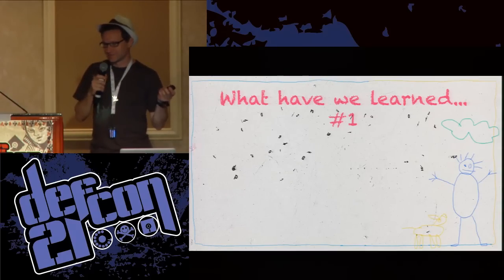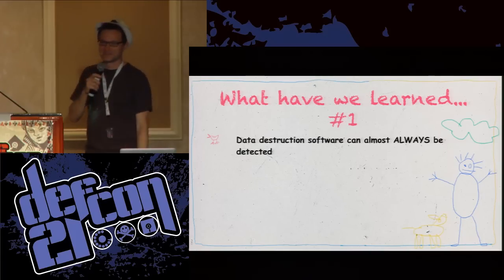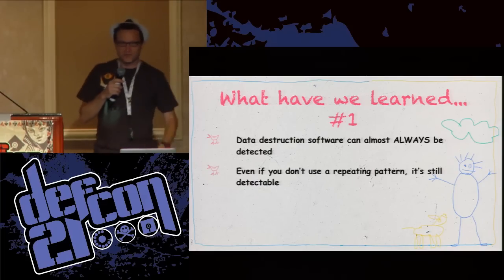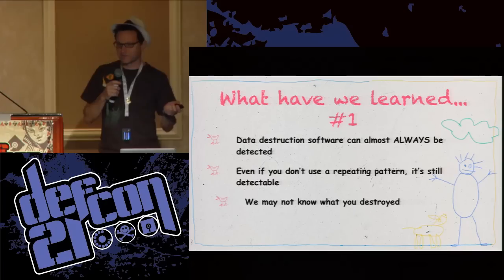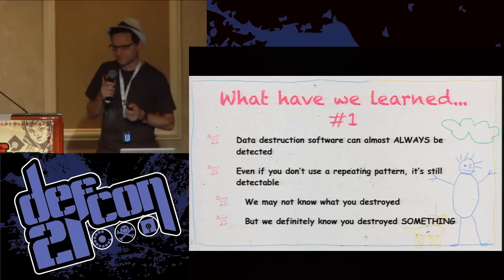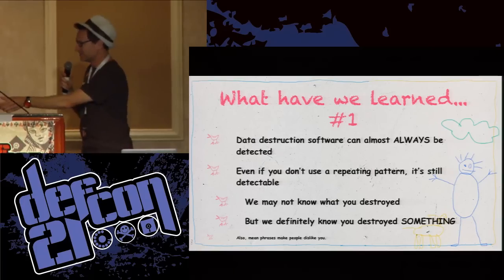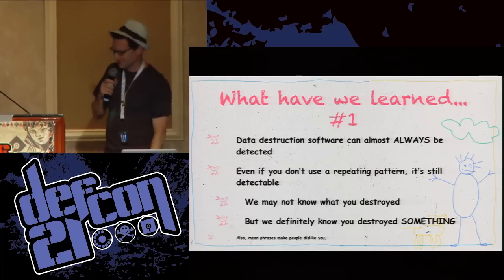What have we learned? Data destruction can almost always be detected. Even if you don't use a repeating pattern, it's still detectable. We see it all the time. There are artifacts left behind that could be part of the pattern, or there are artifacts in the operating system itself. So we might not know what you've destroyed, but we'll definitely know you destroyed something. Also, it doesn't work very well, and mean phrases make people dislike you.